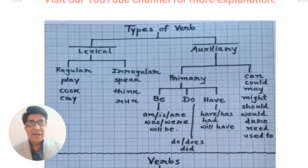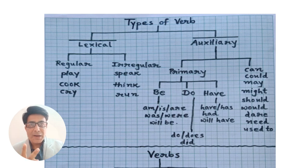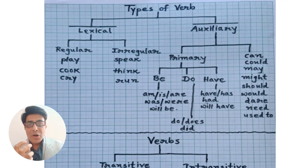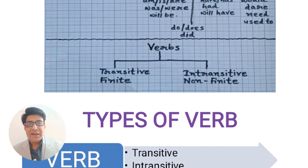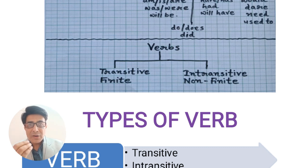As you can see here on the screen, verbs are mainly divided into two categories: lexical verbs and auxiliary verbs. Lexical verbs again can be divided into two categories: regular lexical verb and irregular lexical verb. In the same manner, auxiliaries are also divided into two categories: primary auxiliary verb and modal auxiliary verbs. Verbs can also be transitive verbs and intransitive verbs, and verbs can be finite verbs and non-finite verbs. In this video lecture, we are going to discuss all these different types of verbs and their functions in sentences.